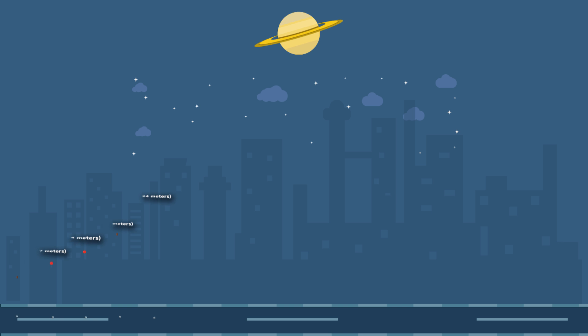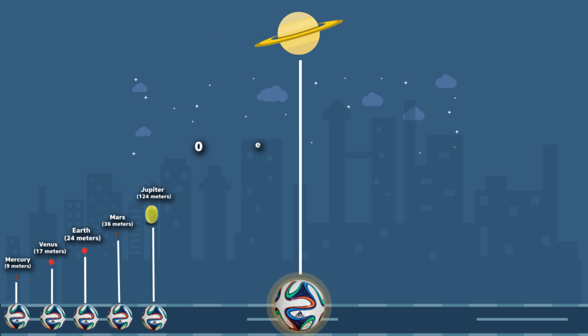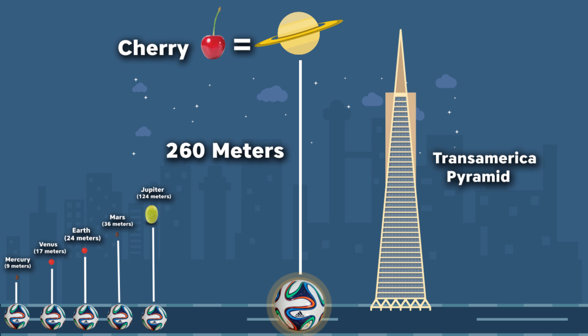And next up is Saturn. It's around 260 meters away with the size of a single cherry. This distance is the same as the height of the Transamerica Pyramid building in San Francisco. Next time when you're in San Francisco and near the Transamerica Pyramid building, just imagine you have a soccer ball on the ground and look at the top of the building. That's where Saturn orbits the sun with the size of a cherry.